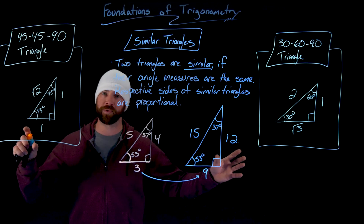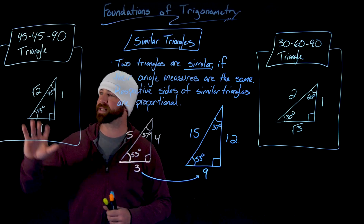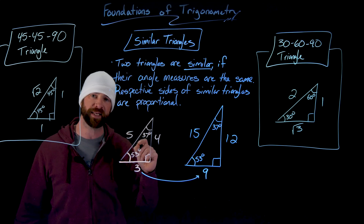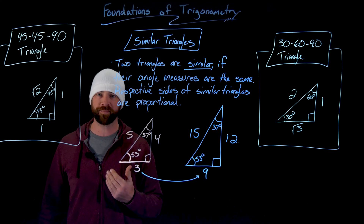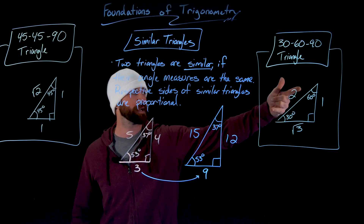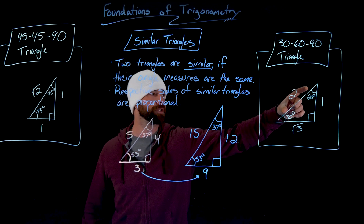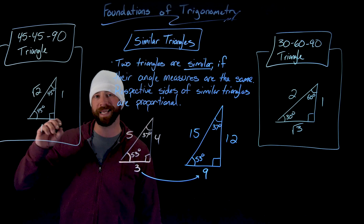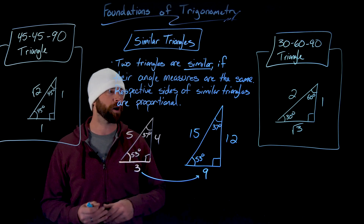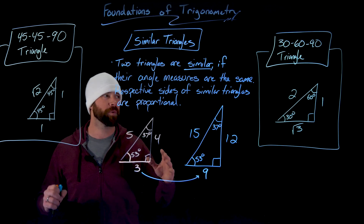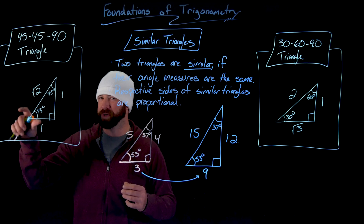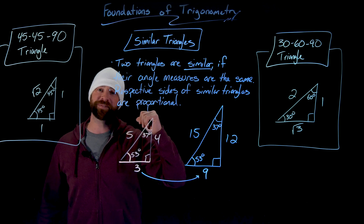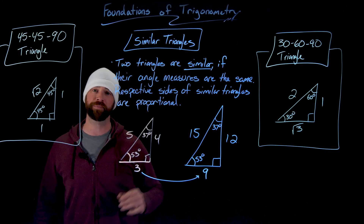Have versions of these triangles written down — you can scale them any way you want without losing important information. Often what we do is make the hypotenuse equal to 1. For the 45-45-90, we divide each length by the square root of 2; for the 30-60-90, we divide by 2. Right after this, at the end of the video, I'll show you the proof of both of these.